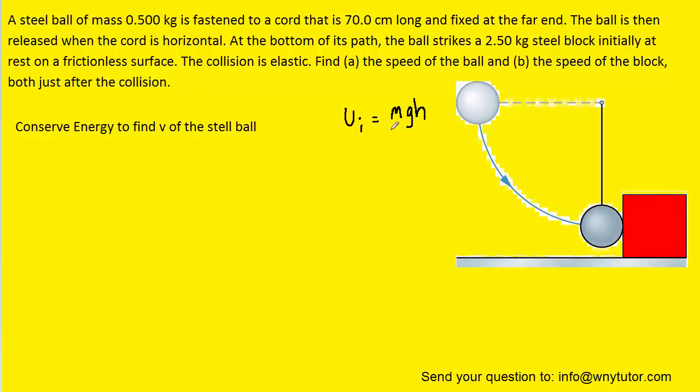We know that initially the only energy present is the gravitational potential energy equal to mgh. The ball then swings down and that energy is converted into kinetic energy, which is equal to 1/2 mv squared. So we can use the conservation of energy by setting those two energies equal to one another and solving for the final velocity of the ball.